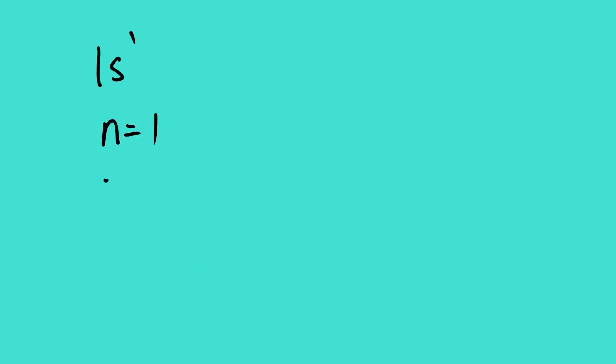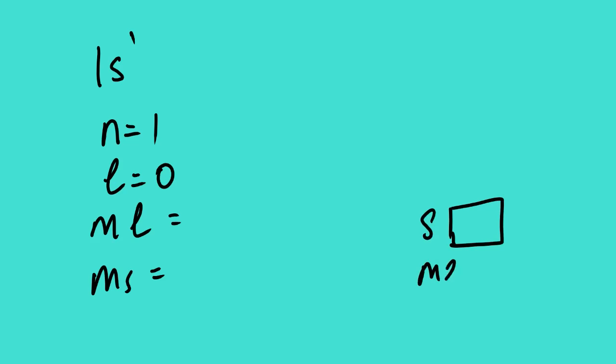For 1S1, N equals 1, L equals 0 since it is an S orbital, and ML equals 0 since S has only one orbital. However, for MS there is something different — we are not sure whether the electron faces up or down. So the value of MS has two possible values: positive one-half or negative one-half.